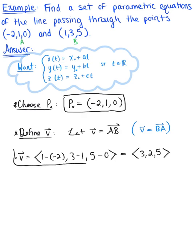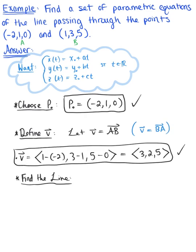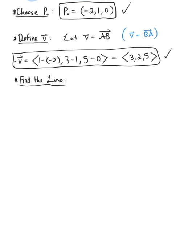All right, we have everything that we need. We have a point on the line. We have the vector parallel to the line. And so we're ready to find the line. And so we'll give ourselves a little bit more room. So here we go.